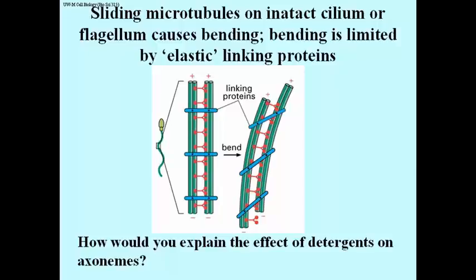The question at the bottom is something for you to think about. We use detergents at various steps: in one case, to strip the cell membrane off of the flagellum or cilium and reveal the axoneme — so that axoneme is a basic flagellum without a membrane. We then use chemical treatments to cause the axoneme microtubules to come apart. The question is: we have introduced some new components here — what do you think some of these detergents are doing to the axoneme?